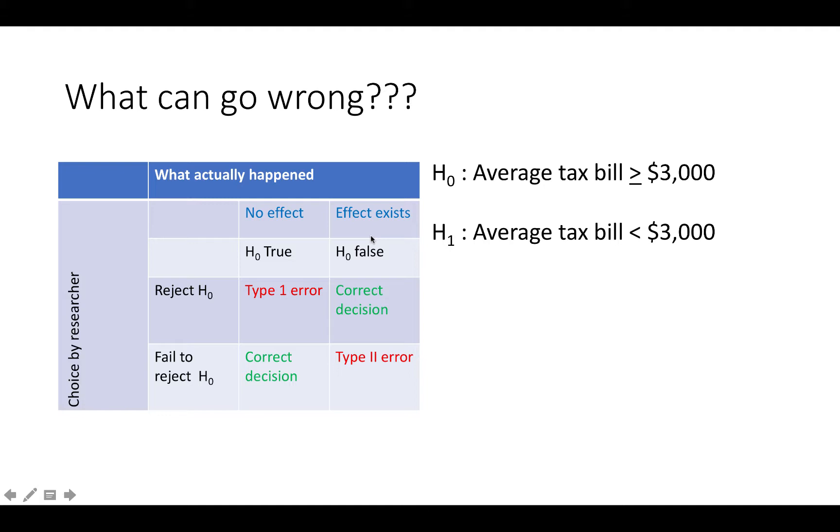The official goes out and takes a sample of data and runs a hypothesis test based on the data. And while the official makes a decision based on the data by comparing the test statistic to the critical value, there is a chance that the decision is not correct.